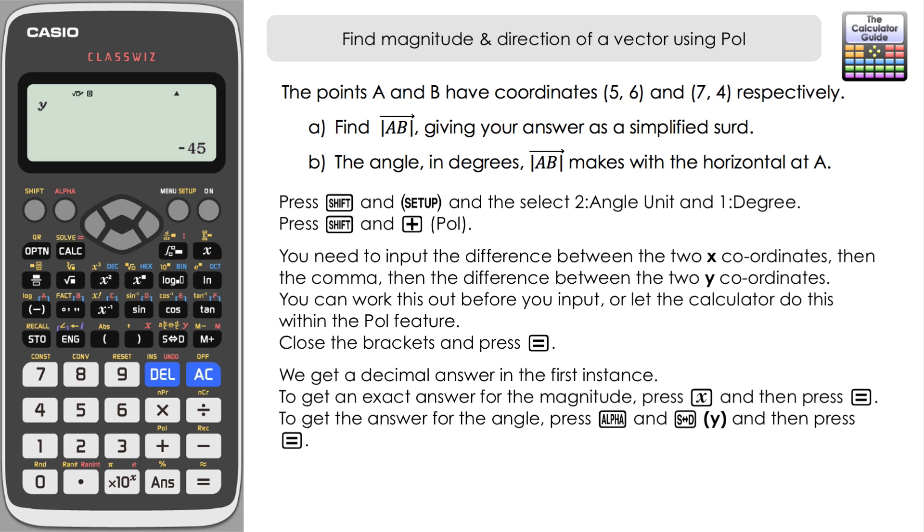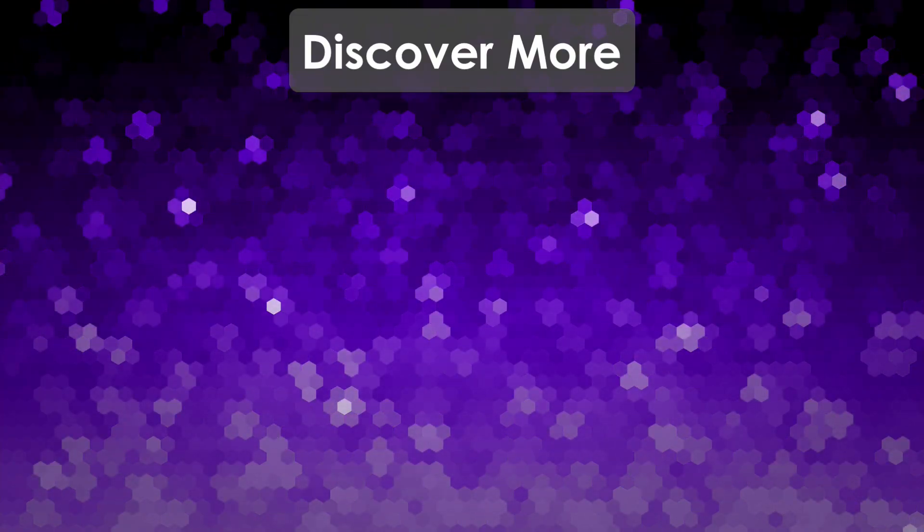So there we go, quite a useful hack if you like to be able to quite quickly find the magnitude and direction of a vector. You can of course use it to find polar coordinates or convert between Cartesian and polar coordinates as well, but also quite useful in terms of being able to use this with forces in vectors or position vectors as we demonstrated with the second example there. Don't forget to like and subscribe for future videos, but that's it for this video. Thank you very much for watching and I will see you next time on the calculator guide.